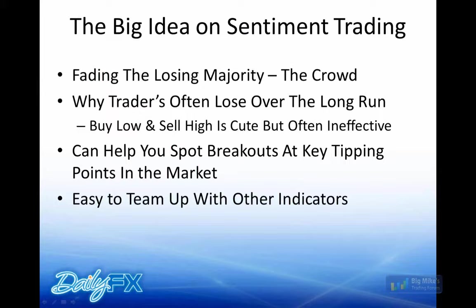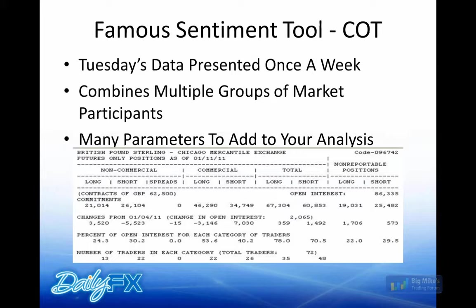I like that it's very easy to team up with other indicators. The key points we're starting with: we are looking at fading the losing majority, also known as the crowd. We'll find key entries when there is an extreme of sentiment, because that's when there's often that watershed effect in trading that we want to be on the right side of. Many of you are probably familiar with the COT — the Commitment of Traders put out by the CME. It gives you certain groups and their positions: non-commercial, commercial.